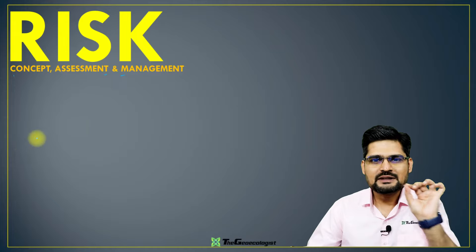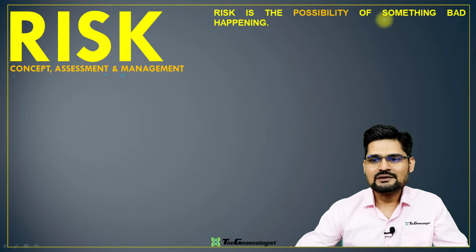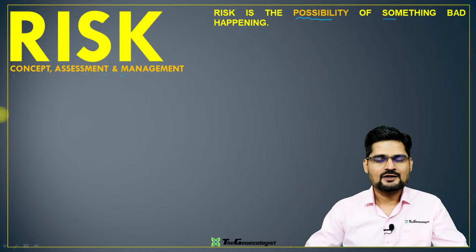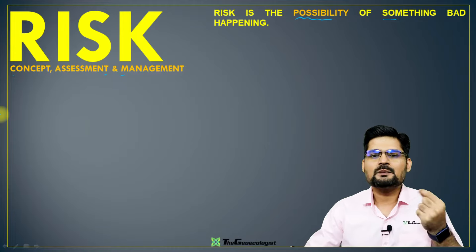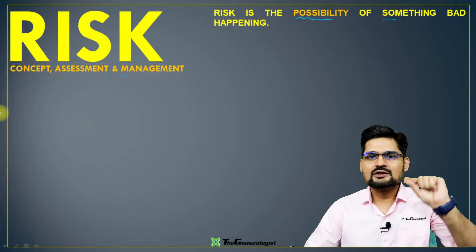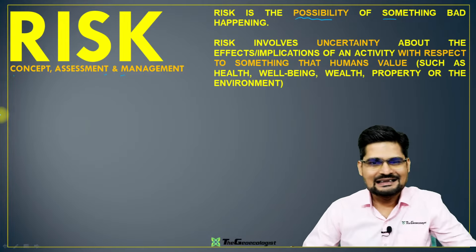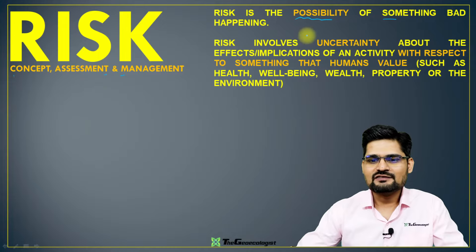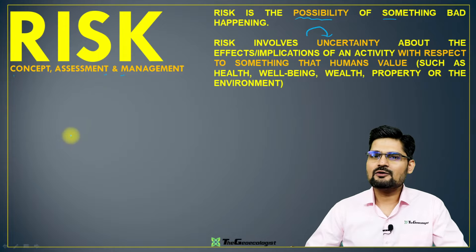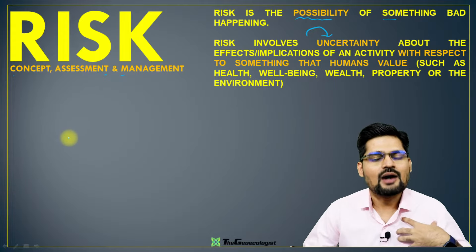In a simplistic way of understanding, whenever we use the word risk, what comes to our mind is something bad is supposed to happen — it's the possibility of that. When we say possibility, it's basically about the uncertainty that we always have in our mind: what is not confirmed, not sure. There is something called uncertainty that's there.